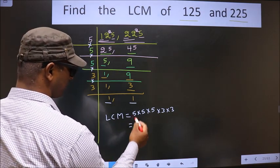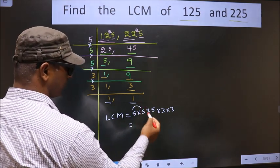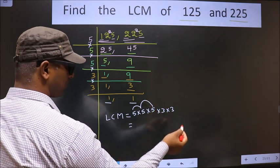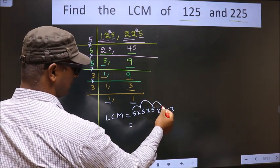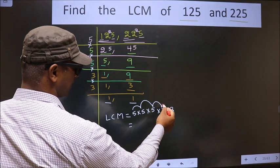That is 5 times 5, 25. 25 times 5, 125. 125 times 3, 375. 375 times 3.